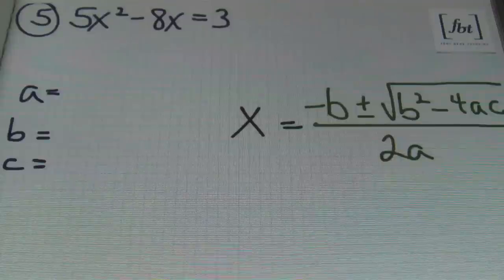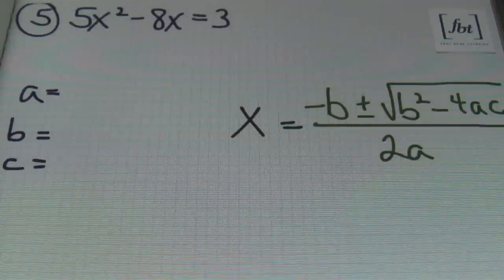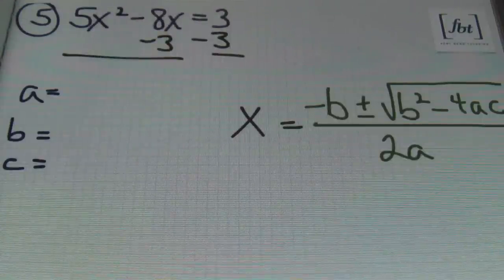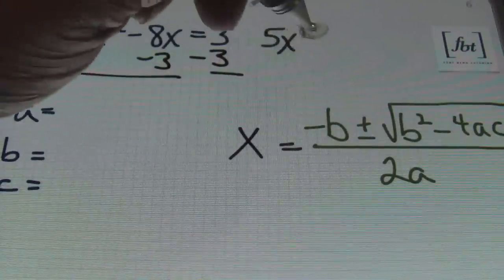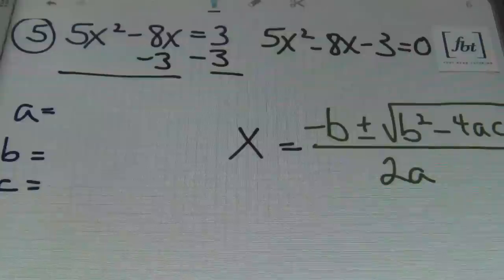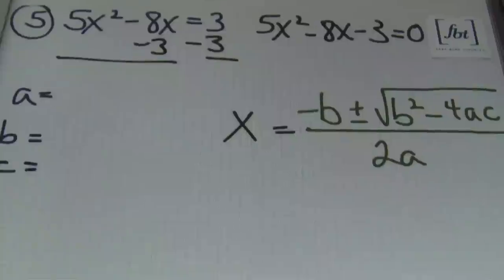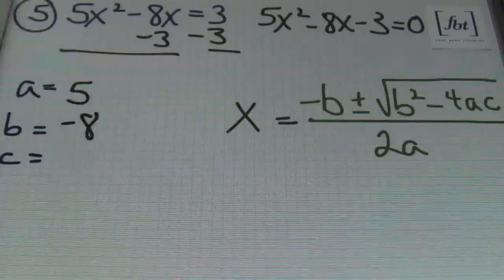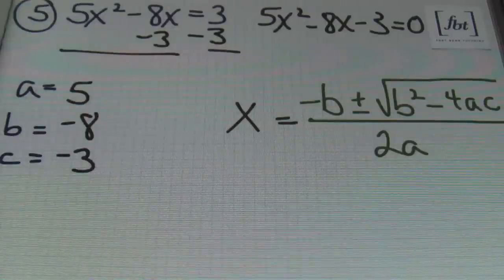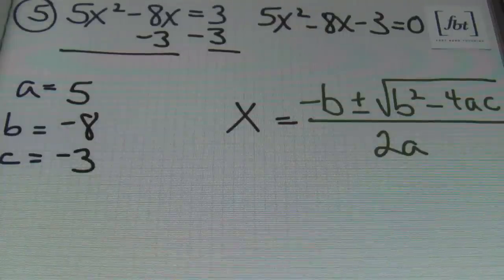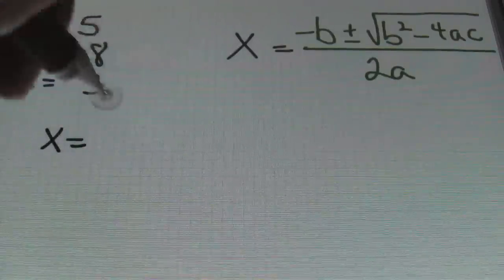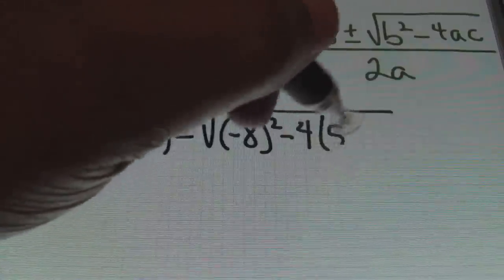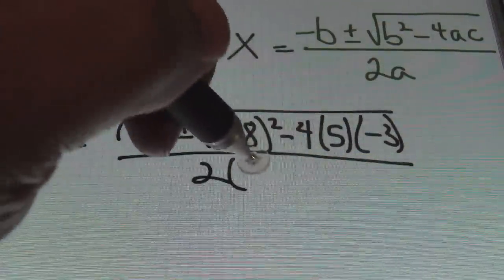Problem number five: 5x squared minus 8x equals 3. The equation is not set equal to zero, so we subtract 3 from both sides, rewriting as 5x squared minus 8x minus 3 equals zero. Coefficients: a equals 5, b equals negative 8, c equals negative 3. Plugging into the quadratic formula: x equals negative negative 8 plus or minus the square root of negative 8 squared minus 4 times 5 times negative 3, all over 2 times 5.